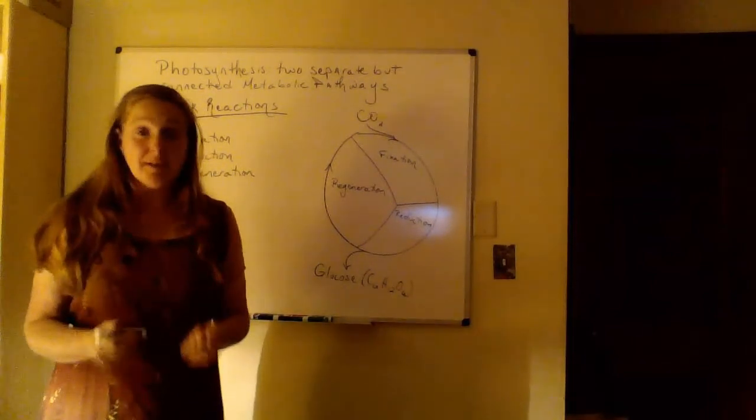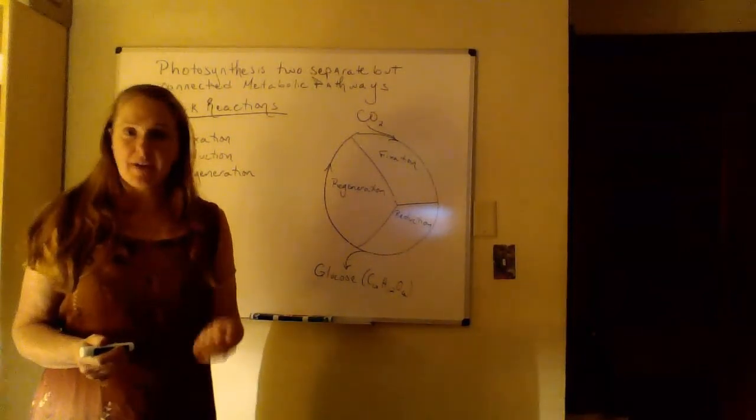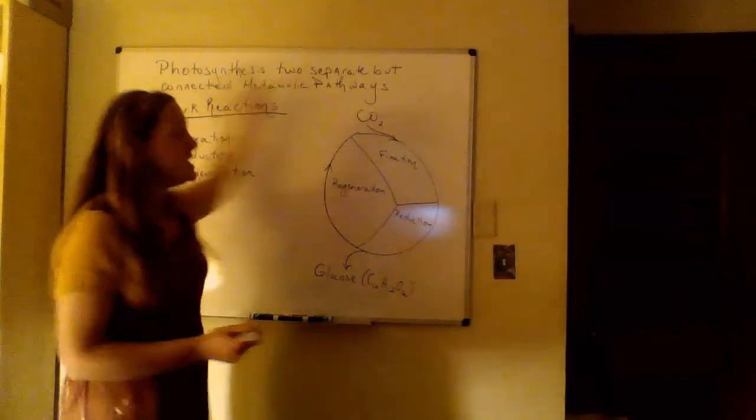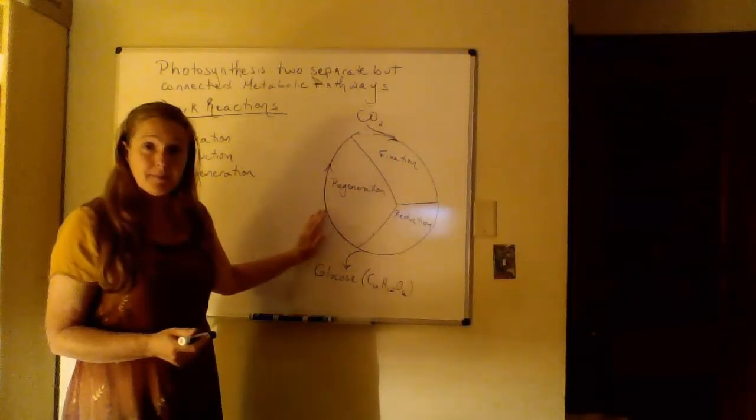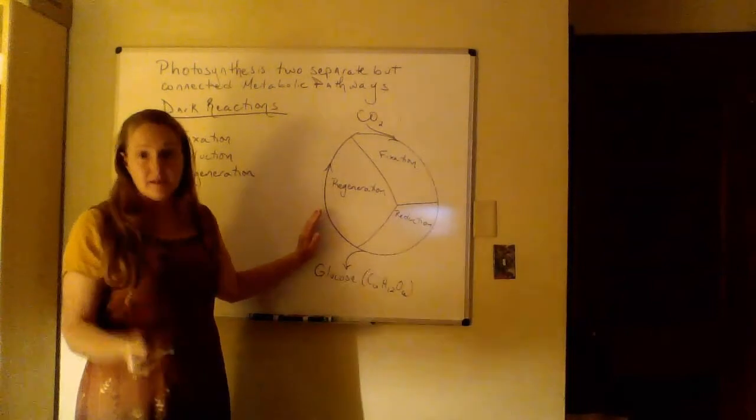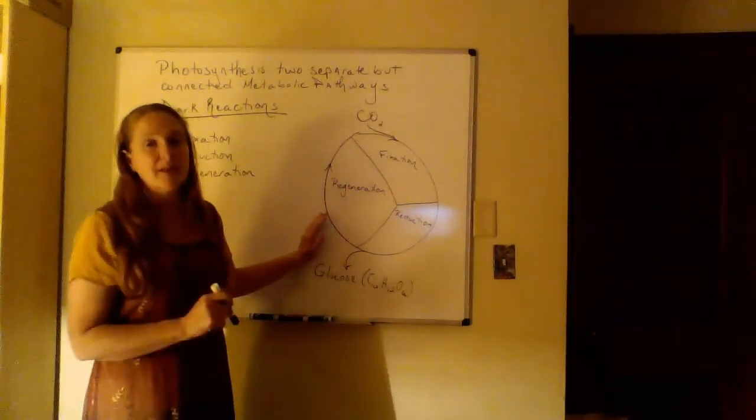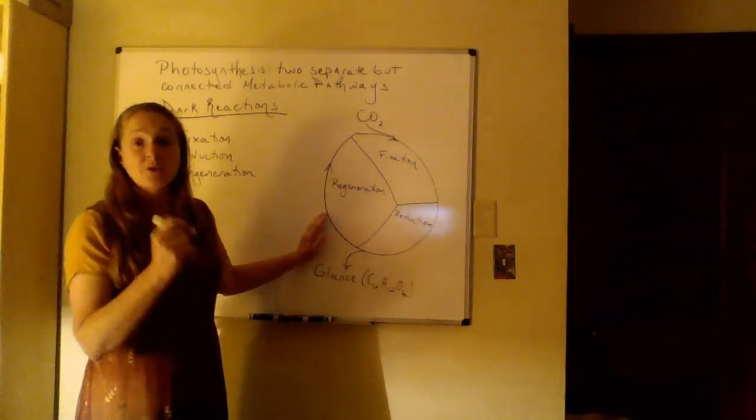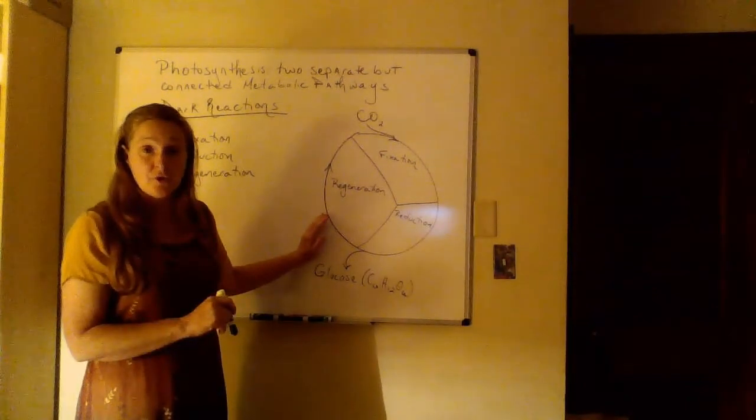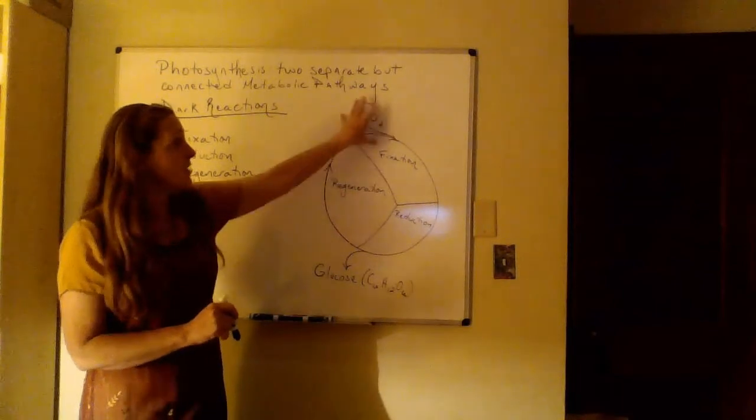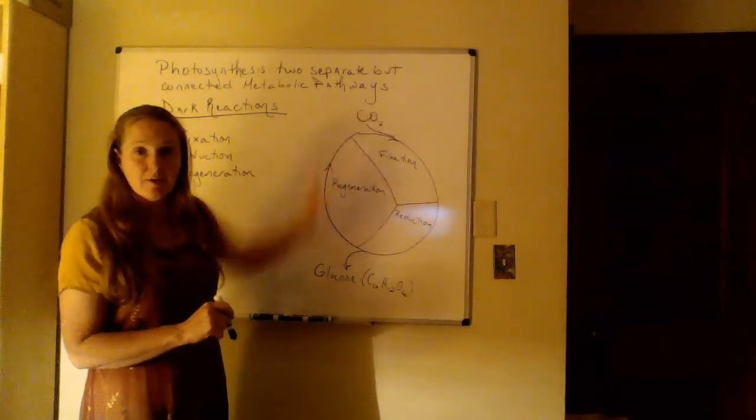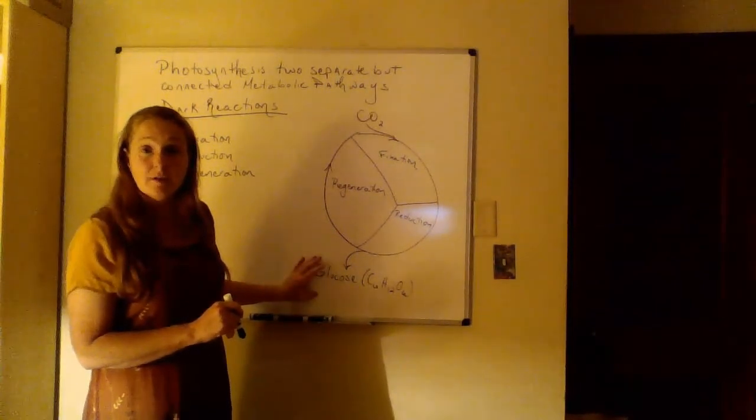ATP and NADPH energy molecules are what connect the light and dark reactions. So if we don't have ATP, if we don't have NADPH, none of this can happen. We need sunlight to get those electrons excited. To make that ATP and NADPH energy so that our rubisco protein and the stroma of our chloroplast can grab those carbon dioxide molecules and eventually turn them into glucose.